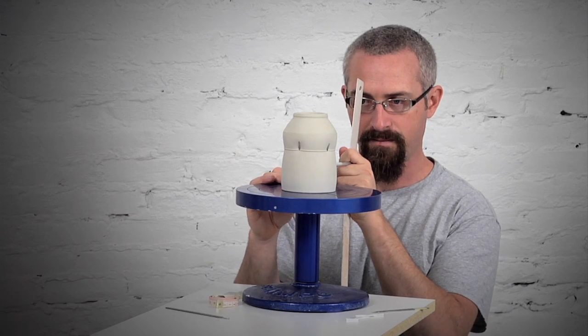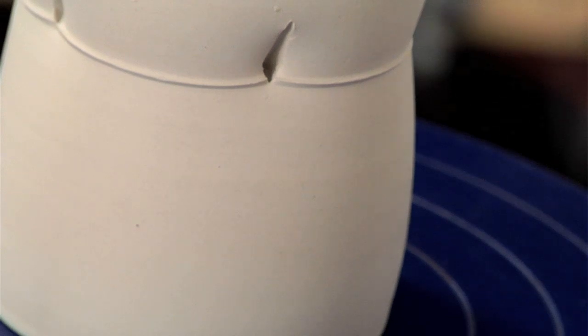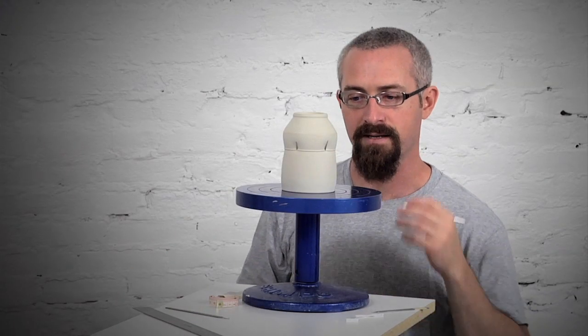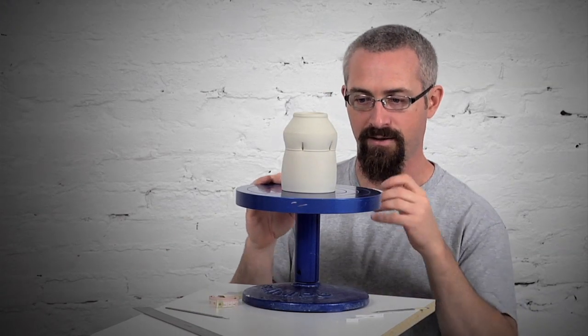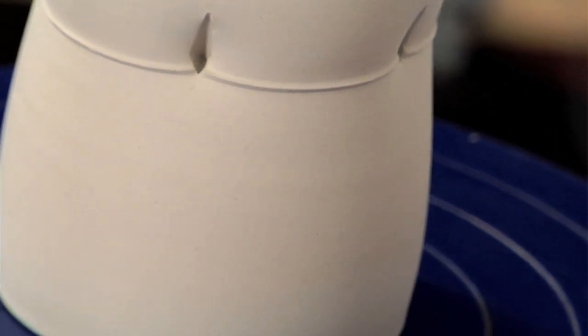Essentially I'm marking out triangles at this point. The basis for a lot of the patterns that I carve into my work is triangles, and so now it's just a matter of extending this point to the rim.